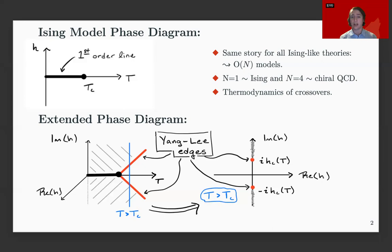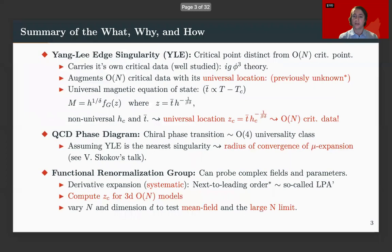N equals 1 is our Ising and N equals 4 is related to chiral QCD. And again, it's the thermodynamics of crossovers that we already talked about here.